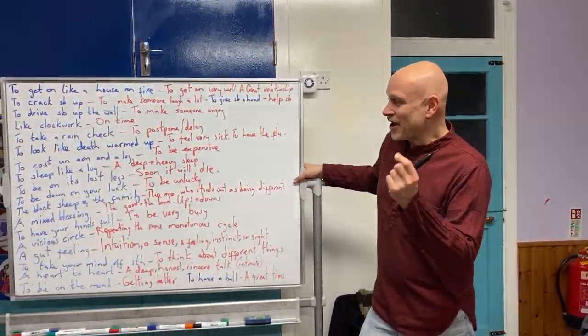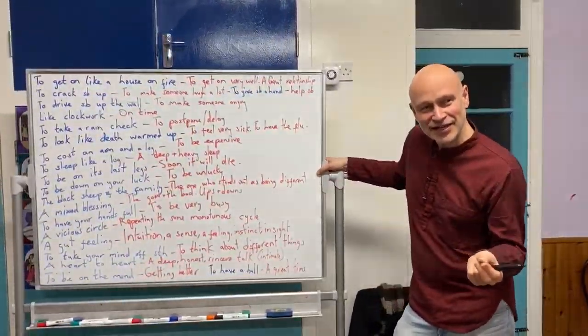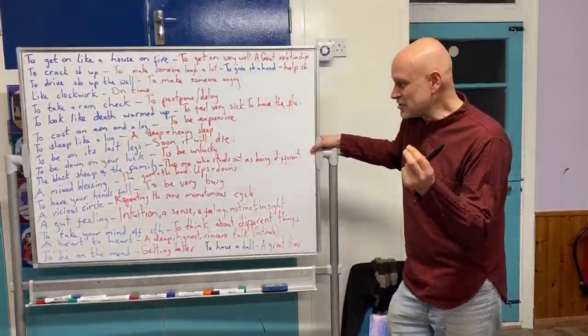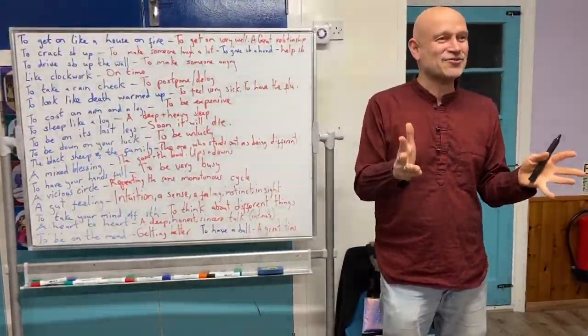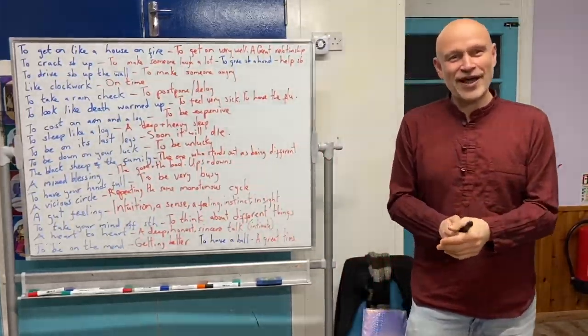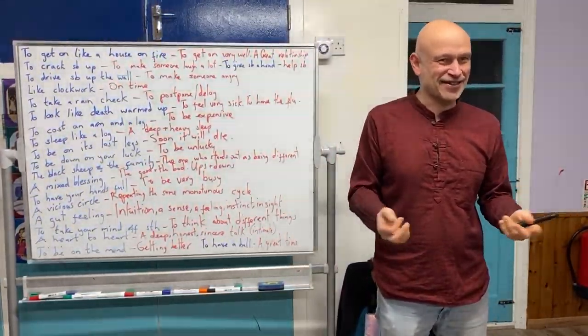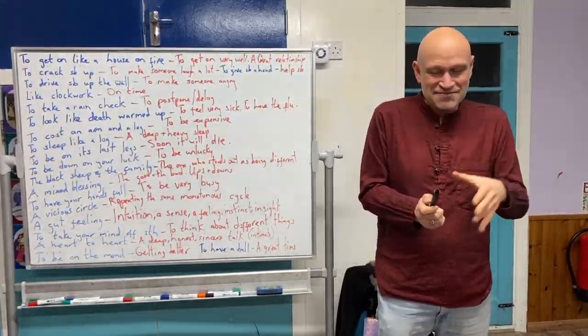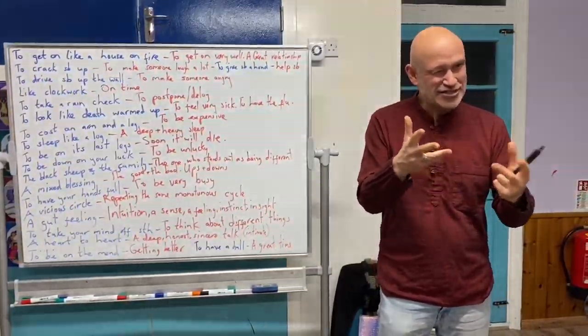To be the black sheep of the family. Now this is an interesting one, this caused a lot of debate. So I've left it at this: to be the black sheep of the family means you are the one who stands out as being different. It's used in a negative way, but usually the one that's different isn't actually such a bad guy after all.